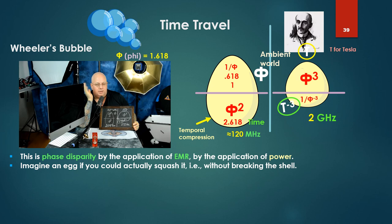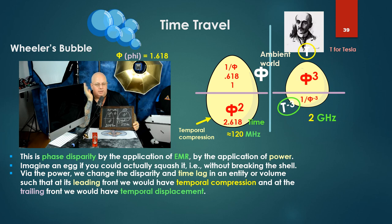This is phase disparity by the application of electromagnetic retardation or EMR, Ken terms this. By the application of power, imagine an egg. If you could actually squash it without breaking the shell via the power, we change the disparity in time lag in an entity or volume such that at its leading front we would have temporal compression, and at the trailing front we would have temporal displacement. So notice, we've inverted the case between the left hand and the right hand egg. At the phi squared 120 megahertz egg, we've got temporal compression at the trailing edge. On the right case, the two gigahertz case, we've got temporal displacement, and vice versa for temporal compression.